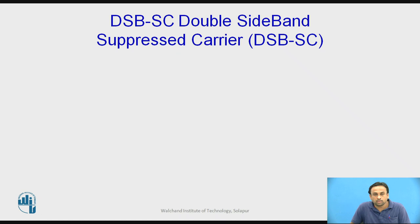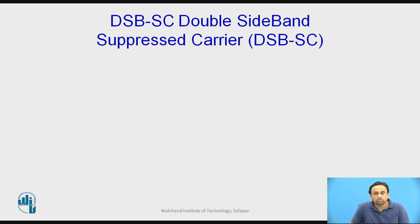In DSB-SC, the carrier is completely suppressed, leaving only the USB and LSB at the output. This results in power saving, because the efficiency of an AM transmitter is just 33%, meaning most of the power is used to transmit the carrier signal, which doesn't contain any information. That's why we completely suppress the carrier, leaving behind only LSB and USB.